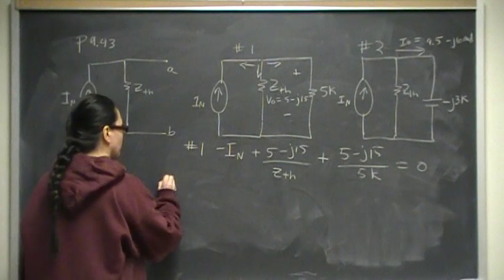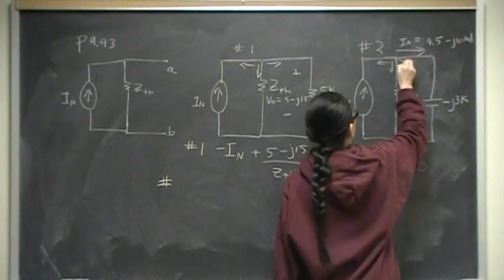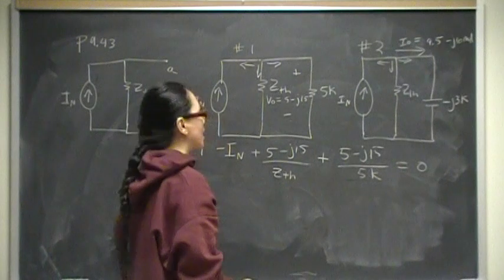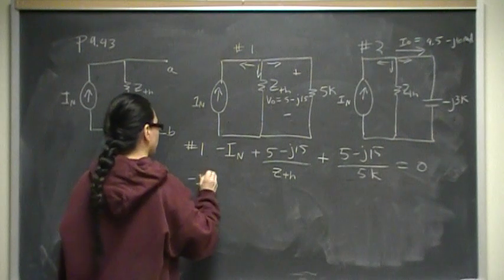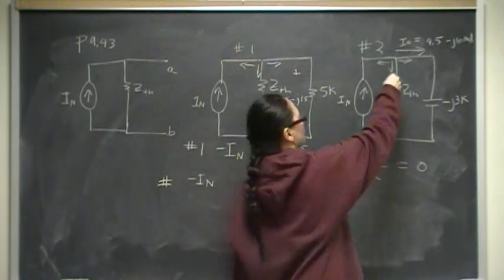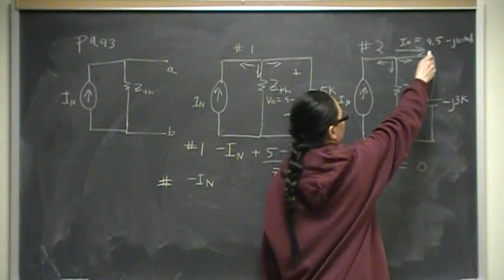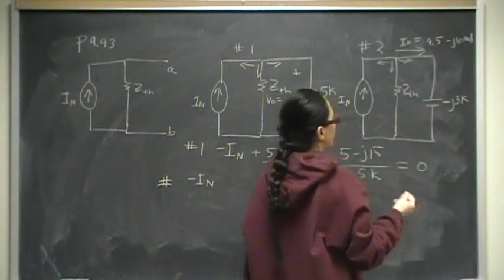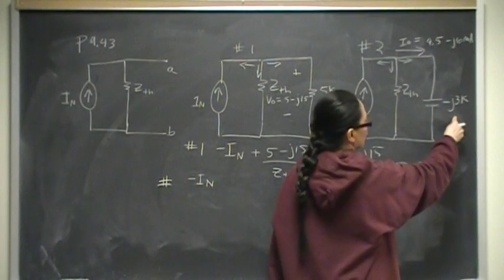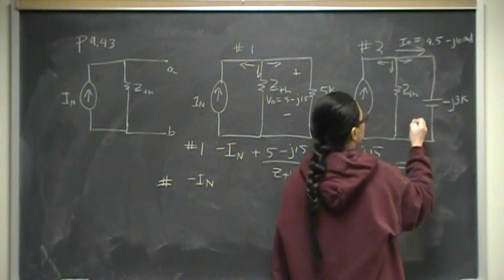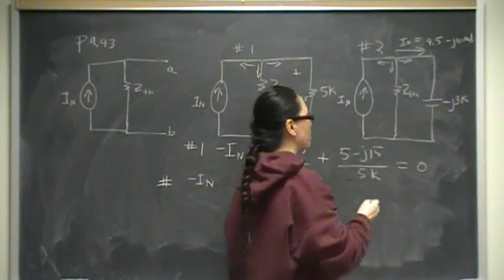Equation number two is going to be, again, the sum of the currents away from the node equals zero. I-N is going into that node, so that is going to be minus I sub N. This current is V over Z-Th. V we don't know directly, but we do know that this I is 4.5 minus J6 milliamps, and we also know that this impedance is minus J3K. V is equal to I Z, so we can calculate this V because they're parallel connected, so they must be the same.